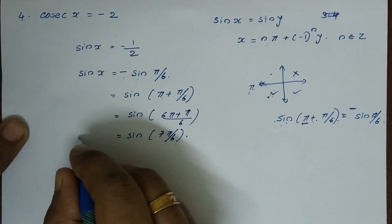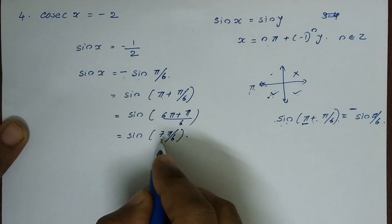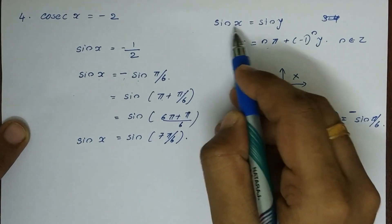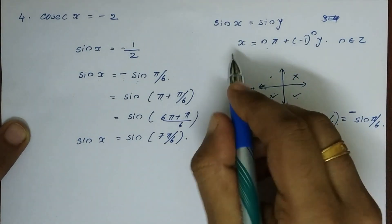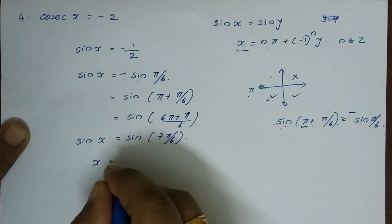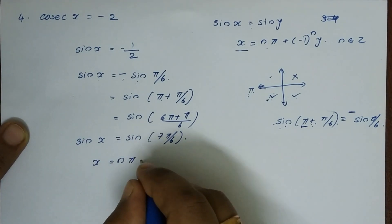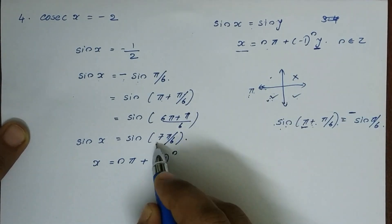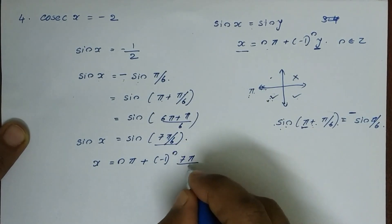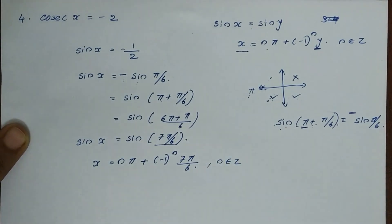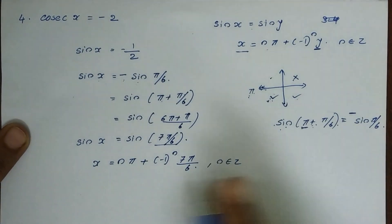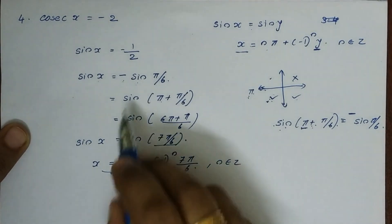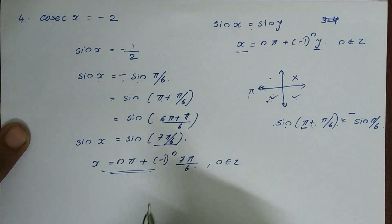In terms of sin, sin x equal sin(π/6). That is sin x equal sin(7π/6) where n belongs to Z. This is the general solution, and 7π/6 is the principle solution — one angle we get.